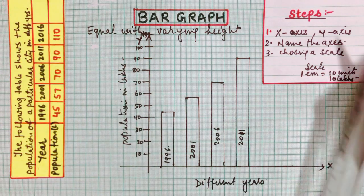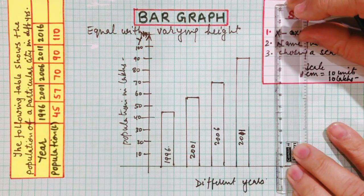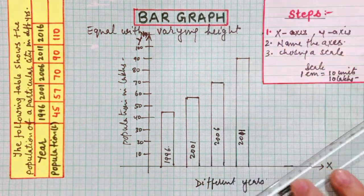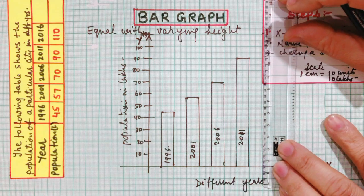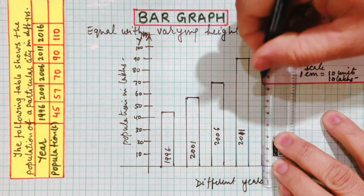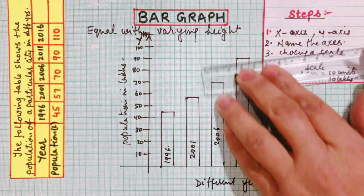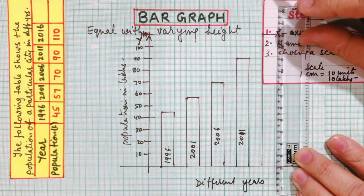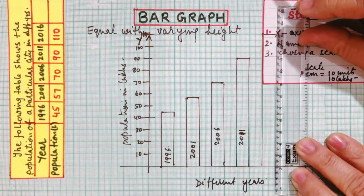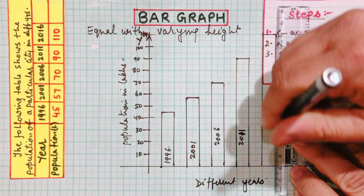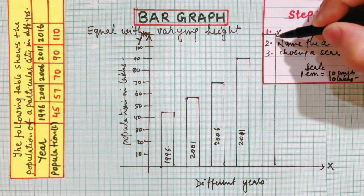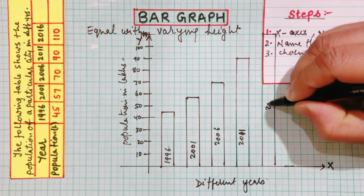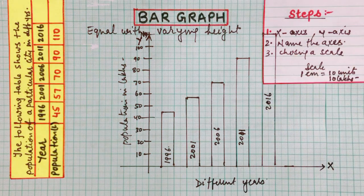In 2011 our population was 90 lakhs, while in 2016 it becomes 110 lakhs. Let us draw 2016 — 110 comes over here. I had used this space for writing the steps so I didn't have enough room, but you can clearly see this is 2016. I hope you can understand it very clearly.